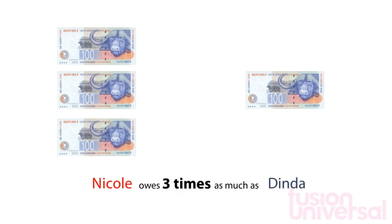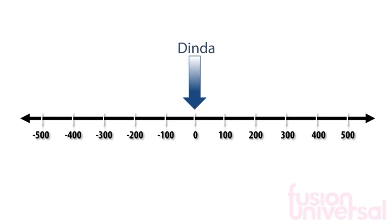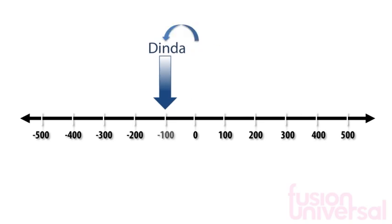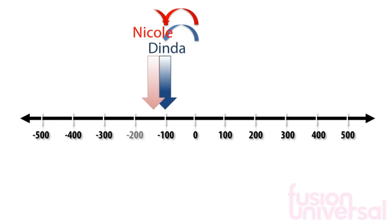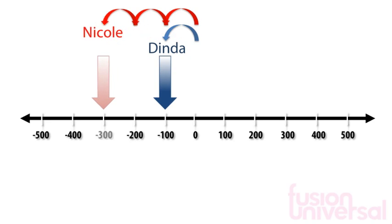We can look at this using a number line. Dinda owes 100 rand. This is represented on the number line by negative 100. Nicole owes 300 rand. This is represented on the number line by negative 300.